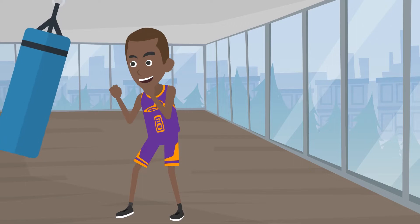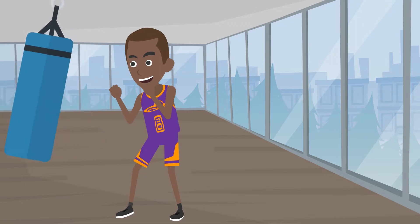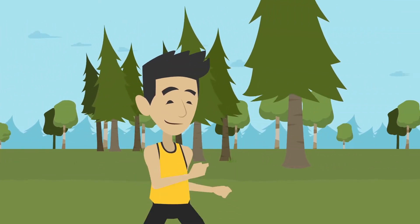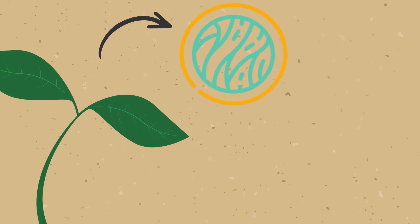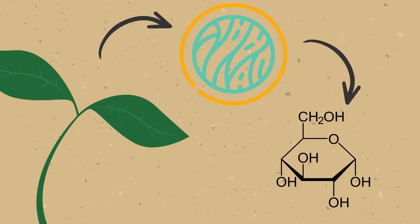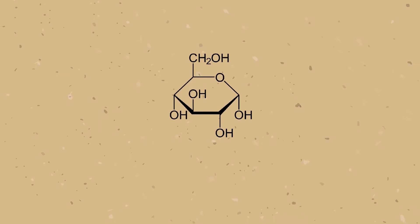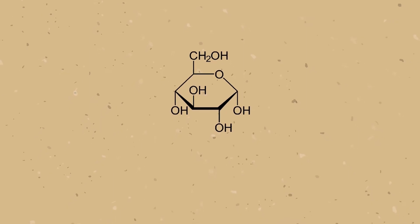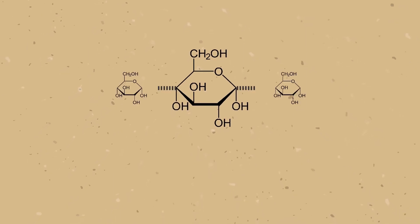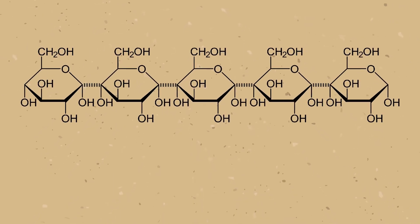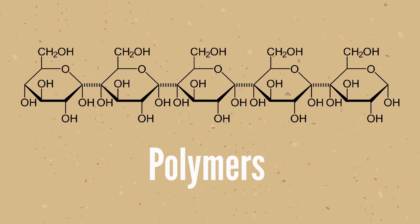Carbohydrates are almost universally used as an immediate energy source in living things, but they also play structural roles in various organisms. Carbohydrates include single sugar molecules, but they can also be formed by a chain of them. This big chain is also called polymers.